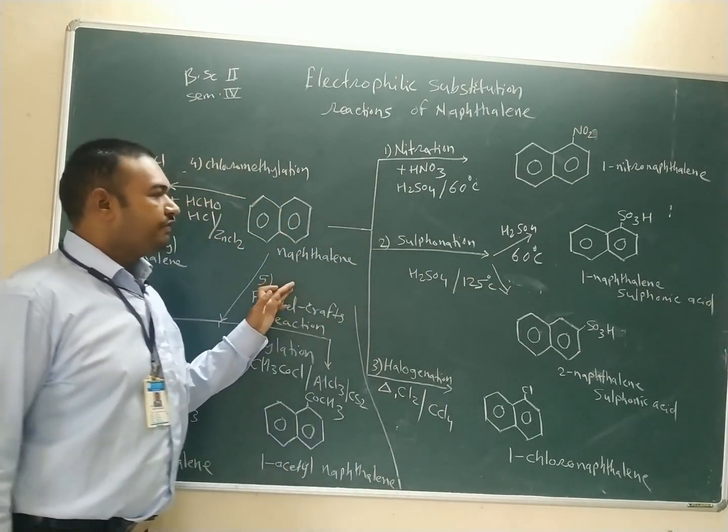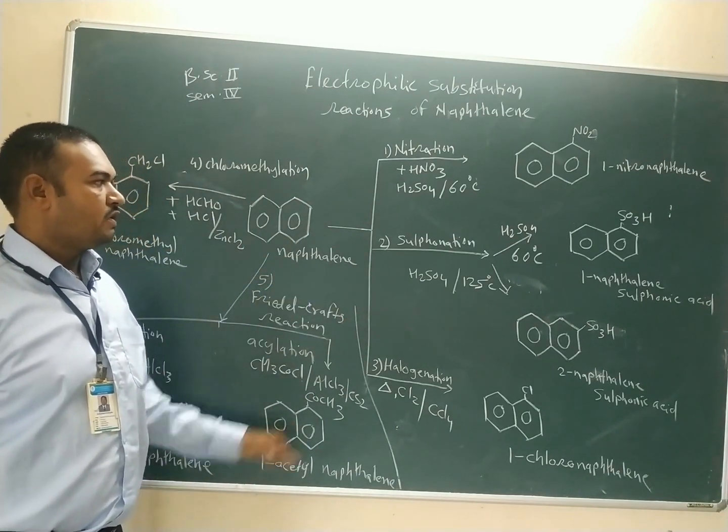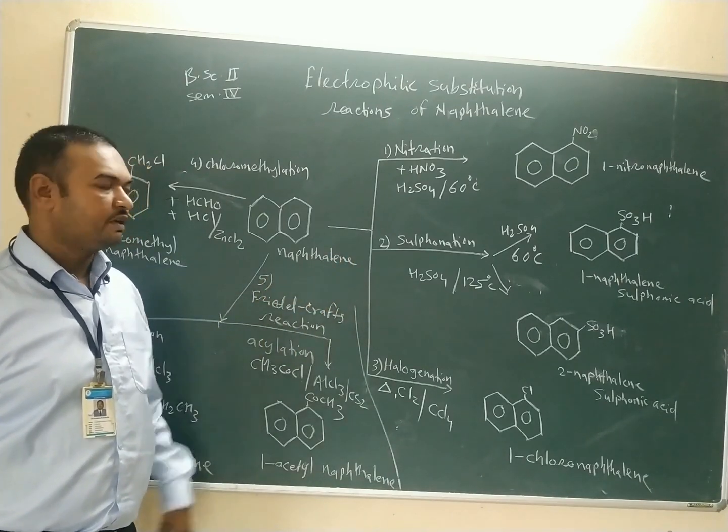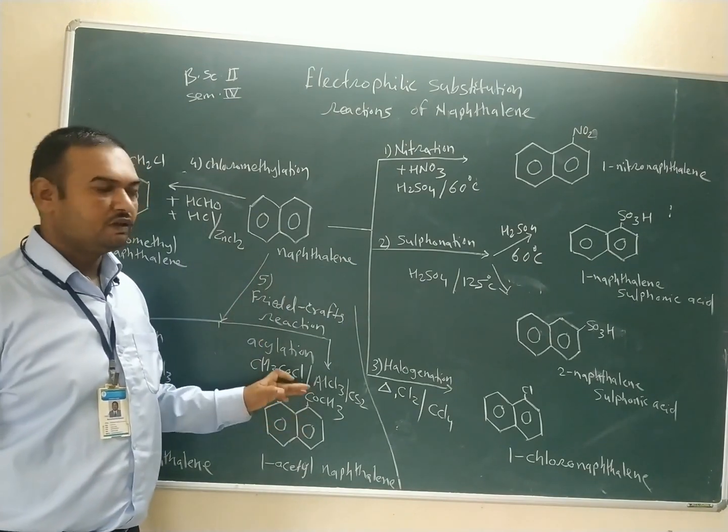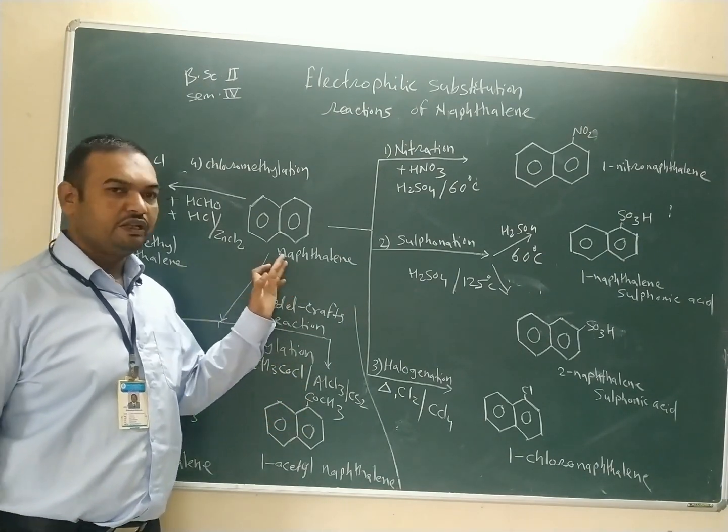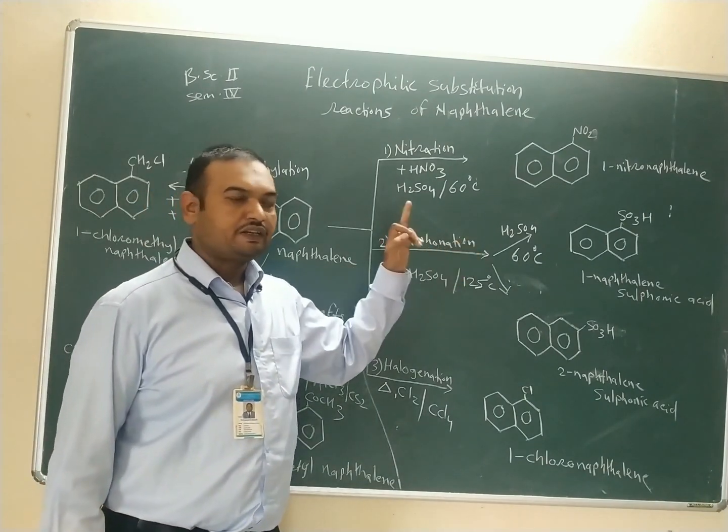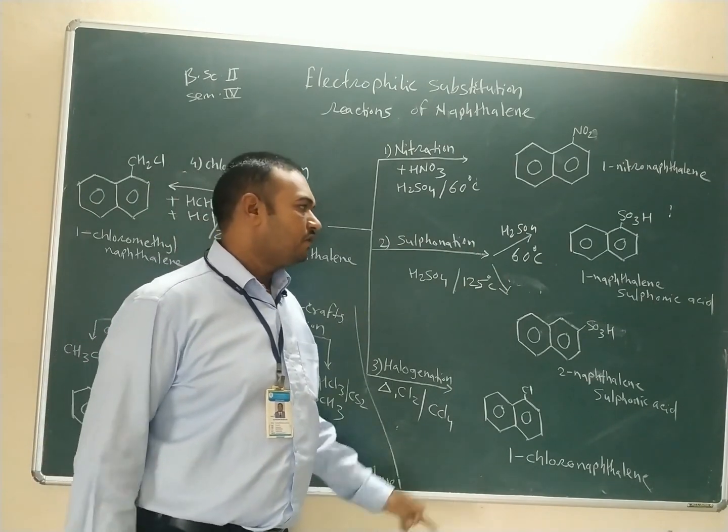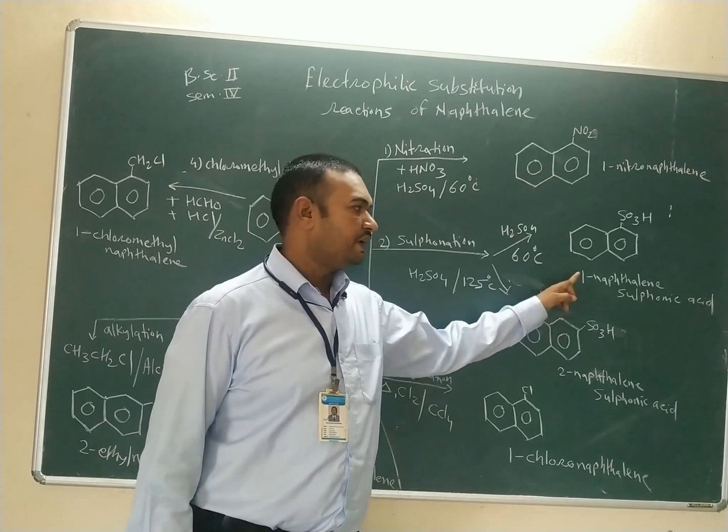Now we will discuss the next reaction, sulphonation. Sulphonation gives two products at two different temperatures when reacted with naphthalene. When naphthalene reacts with sulfuric acid at 60 degree Celsius, we get 1-naphthalene sulphonic acid.